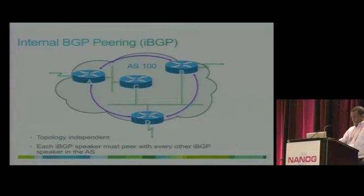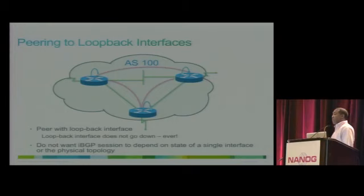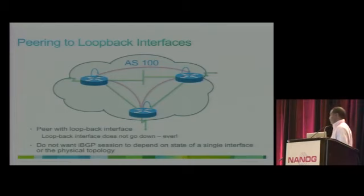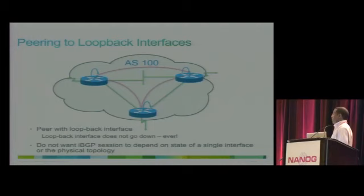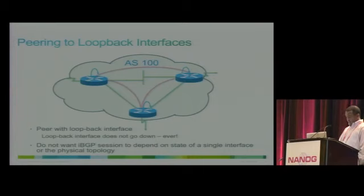It is very important for IBGP peering to use loopback addresses instead of physical interface IP addresses. The physical IP address will disappear if the corresponding port or link goes down, whereas the loopback IP address never goes down as long as the router is up. So it's important to configure a loopback address and use it for IBGP peering.